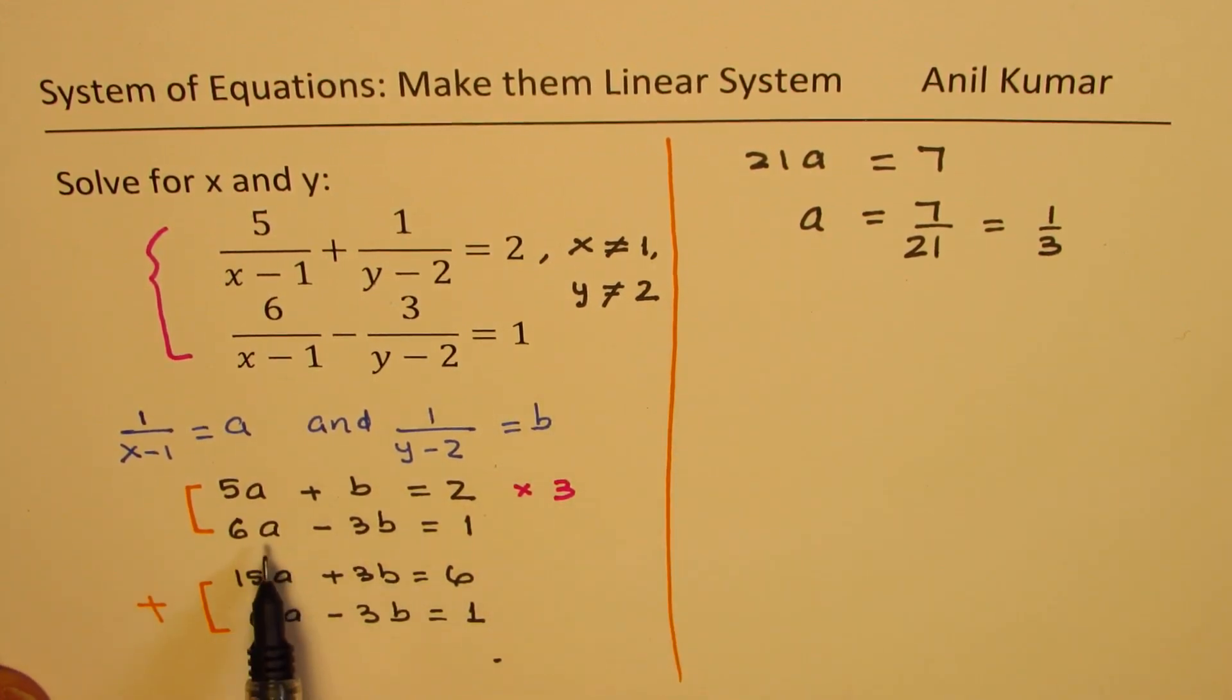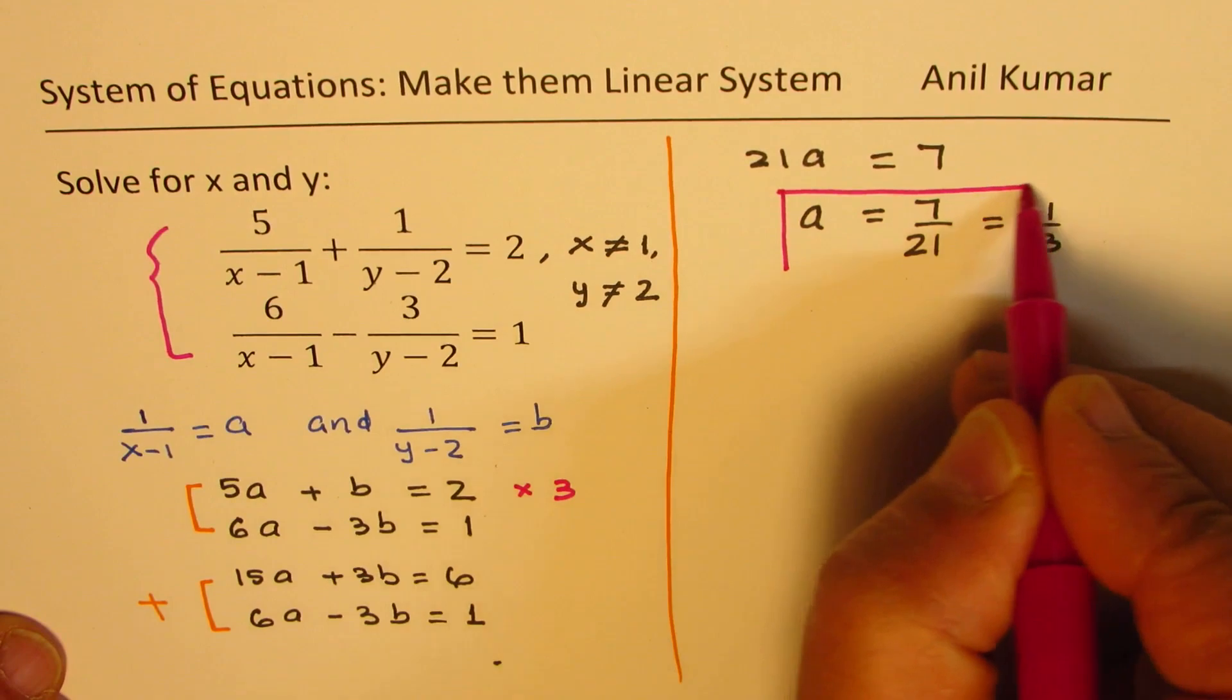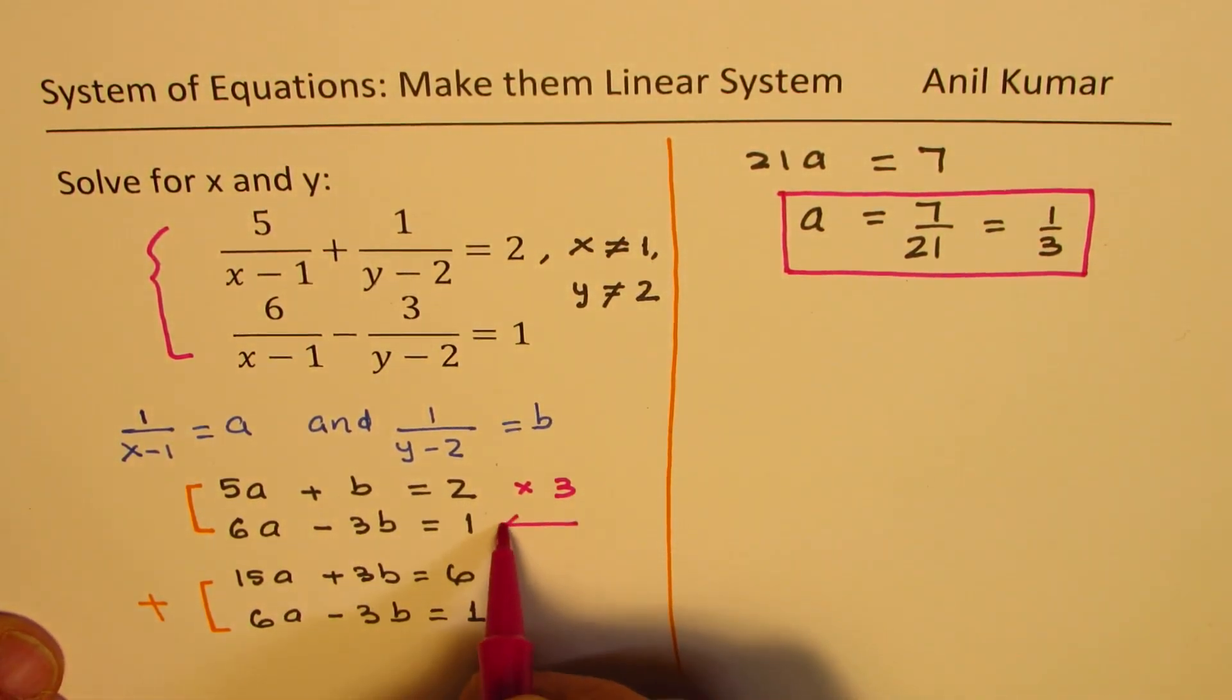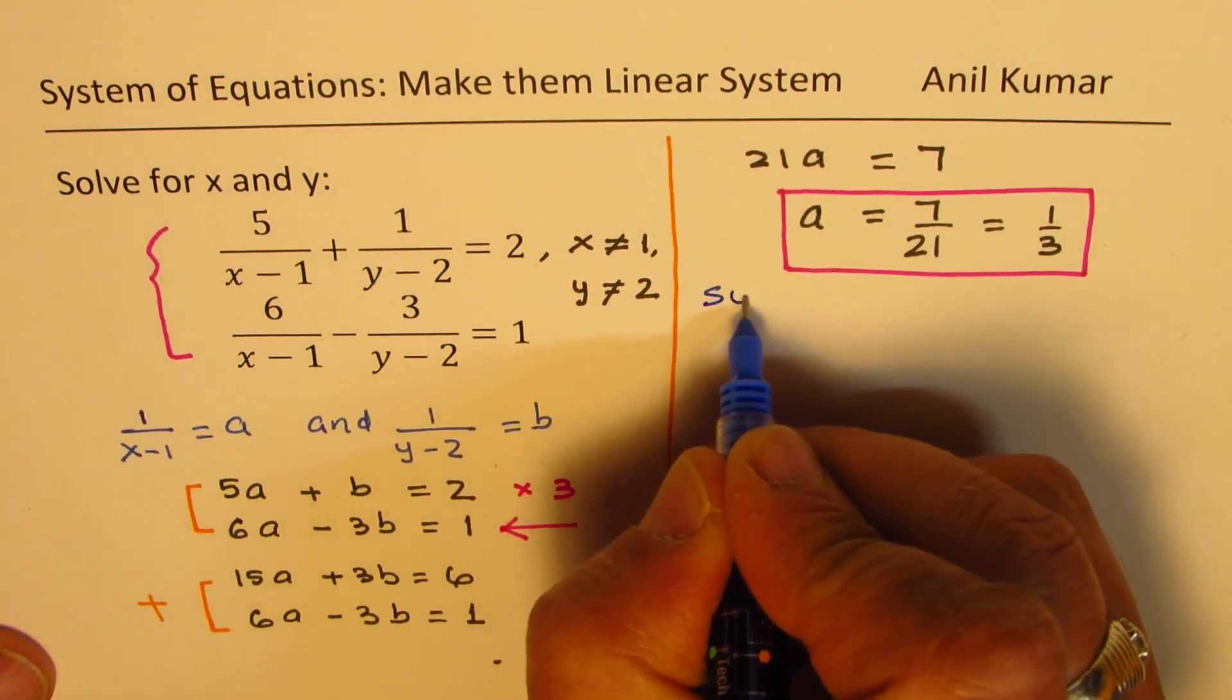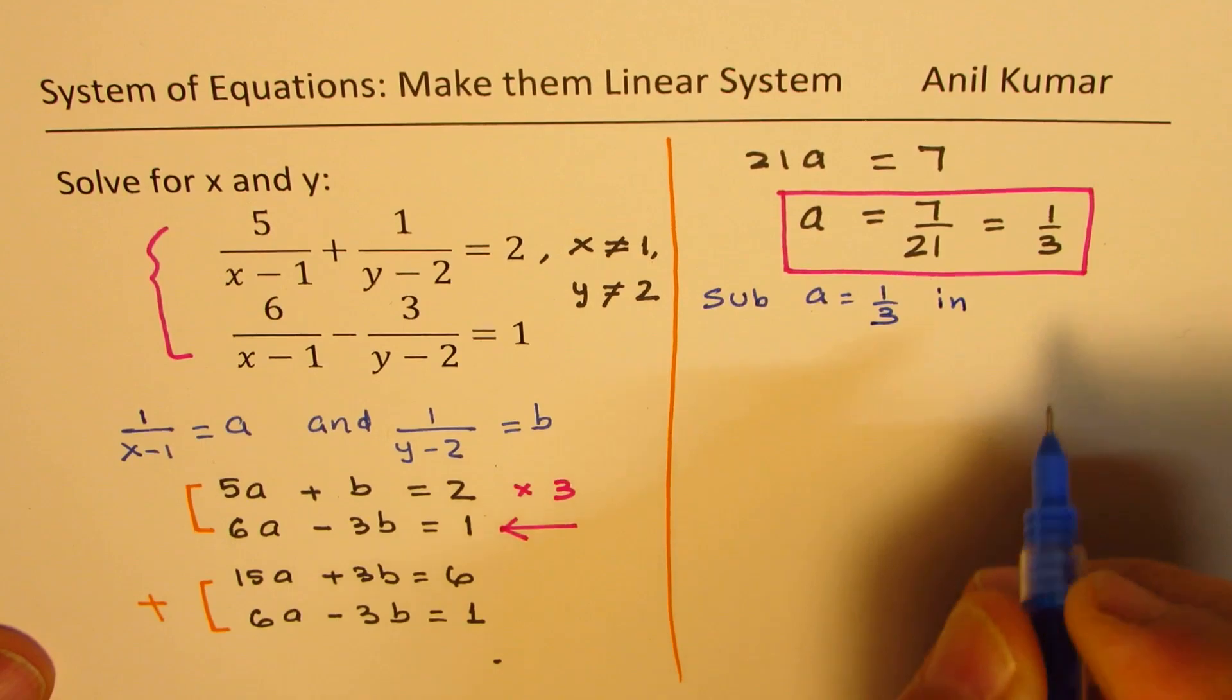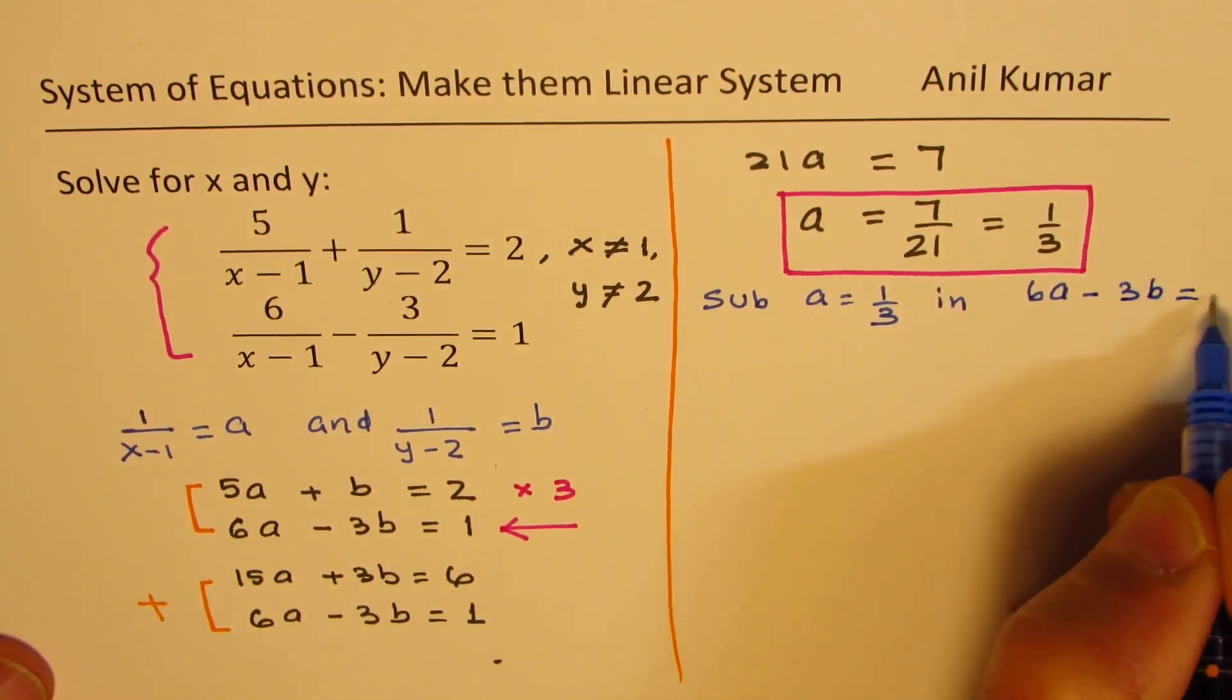Substituting the value of a in one of our equations, we can calculate what b is. So now I will substitute this value of a, which is 1 over 3, into this second equation, since we'll get rid of fractions. 6 is a multiple of 3. So I'm going to sub a equals 1 over 3 in the equation 6a minus 3b equals 1.